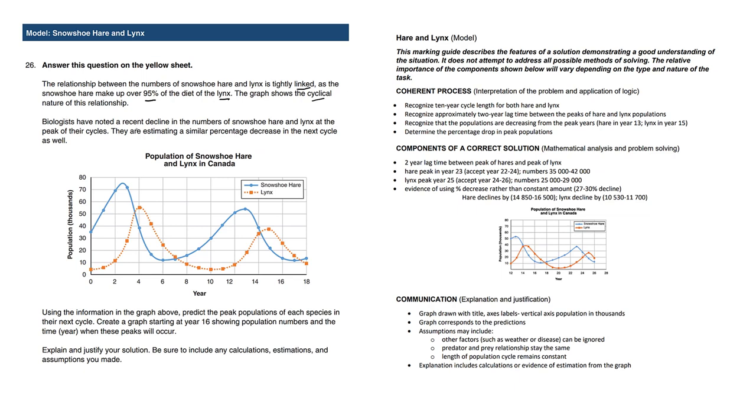Biologists have noted a recent decline in the number of snowshoe hare and lynx at the peak of their cycles. So look at the peak of the cycles here versus here. Both the hare and the lynx are going down together by a certain percentage, and that will go down again. That's the estimation.